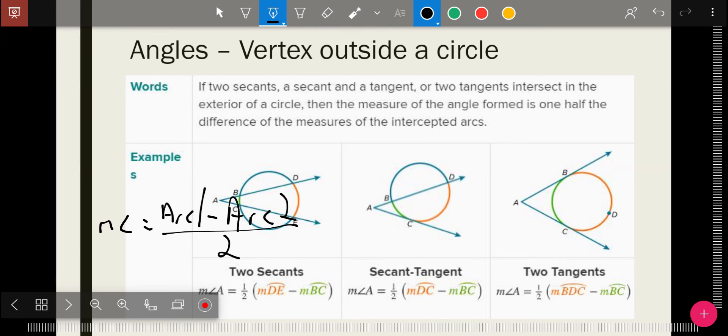Now, which one's arc one, which one's arc two? You want a positive number, so always do bigger number minus smaller number. Or you could think of arc one as always further away from the angle. But I just think of it as we want a positive answer, so bigger number minus smaller number divided by two.